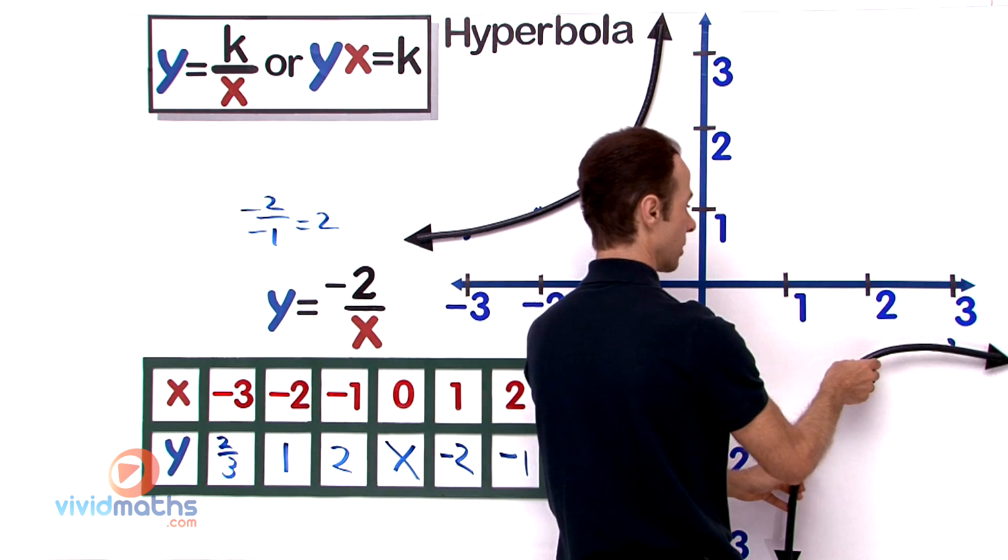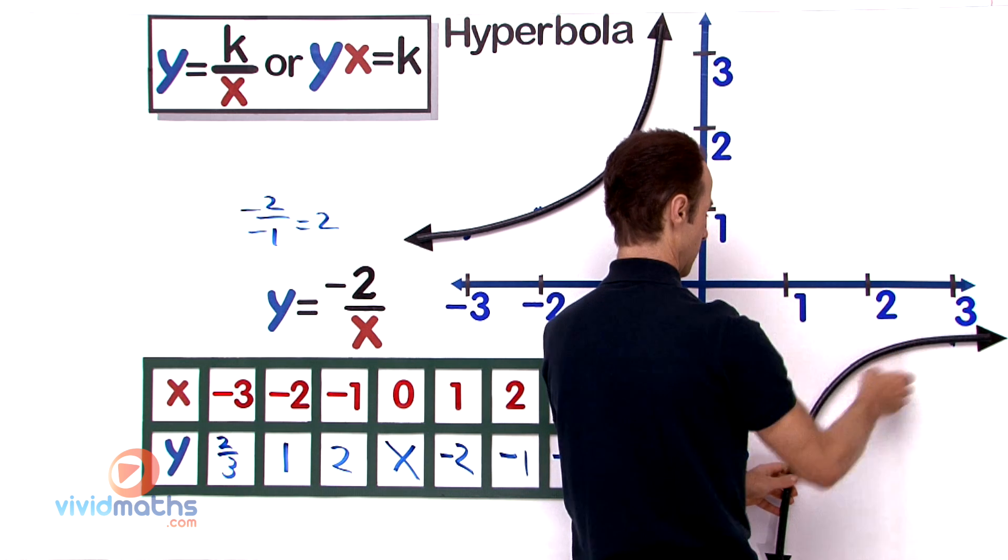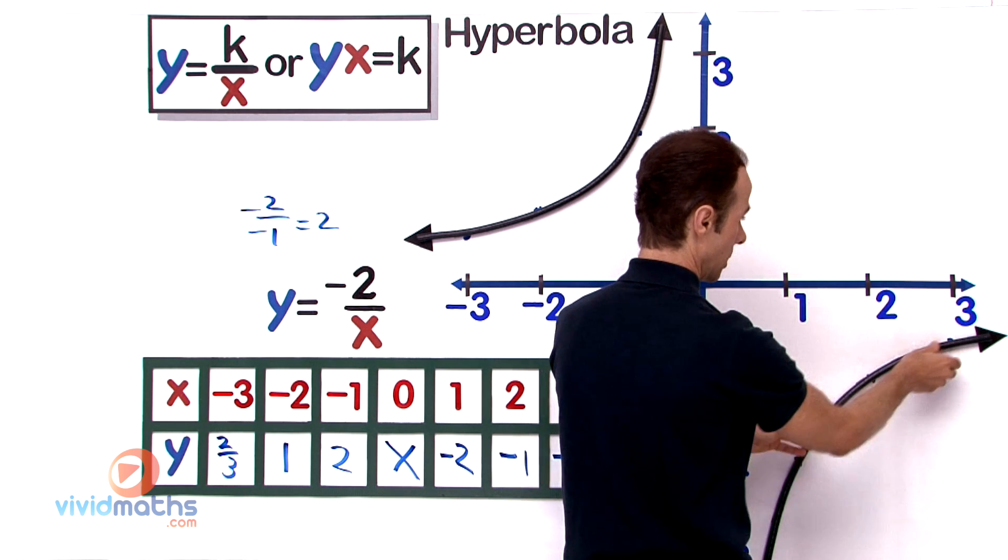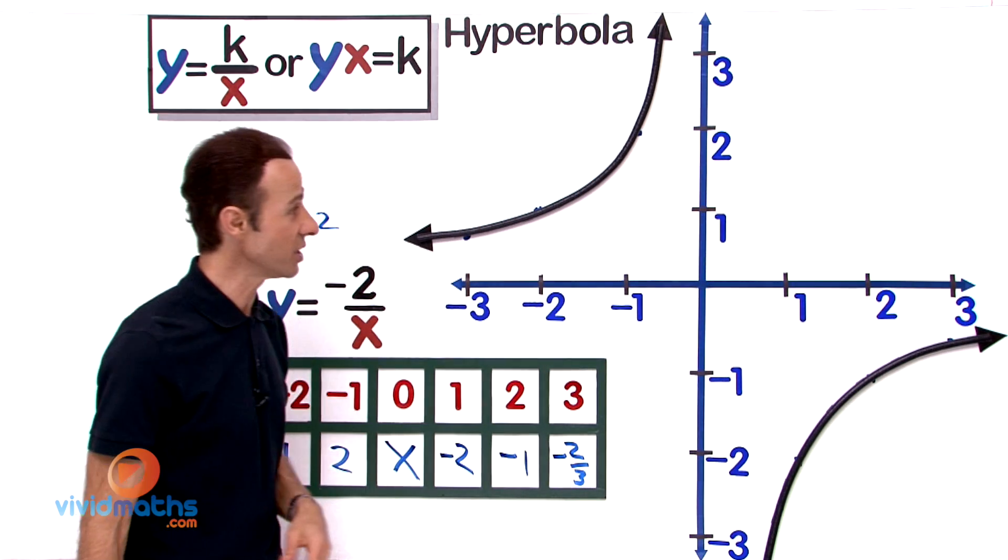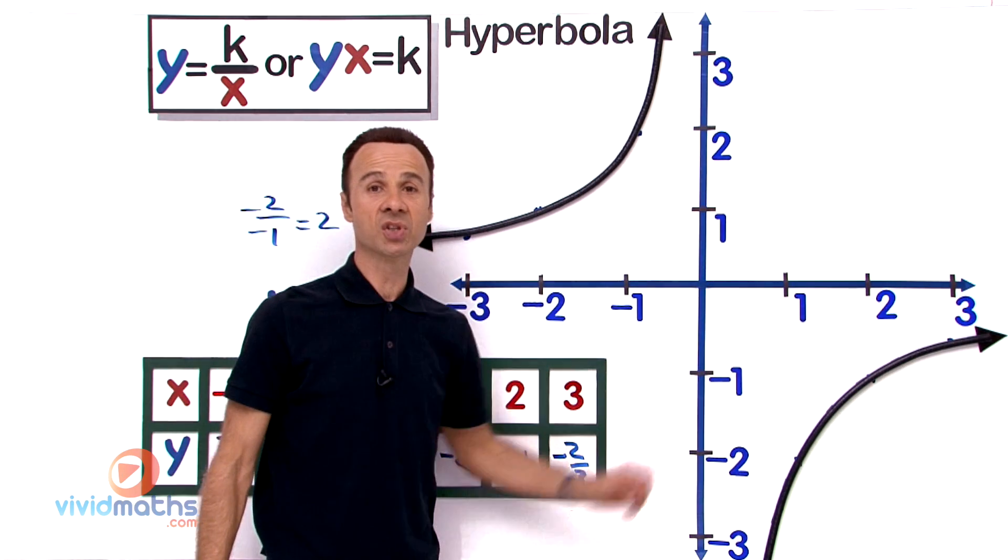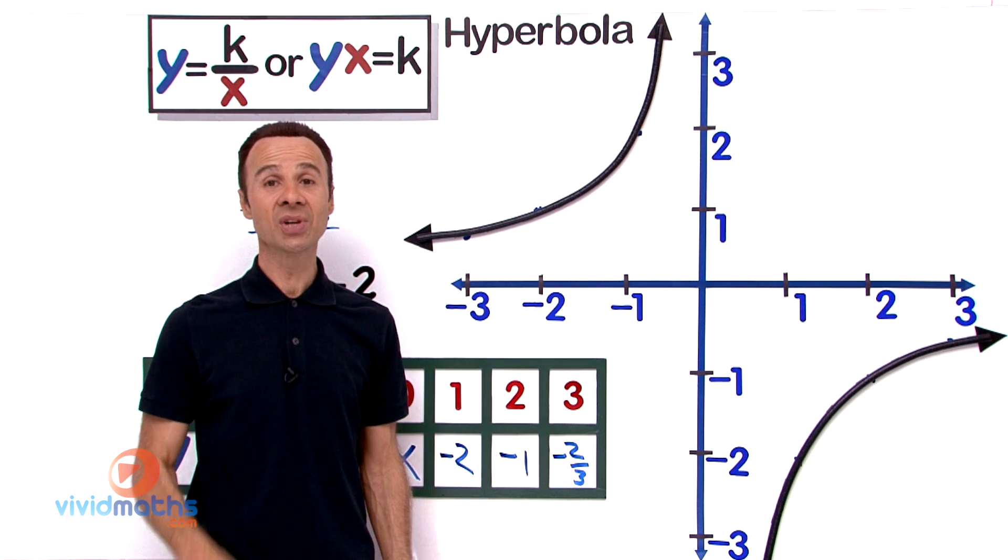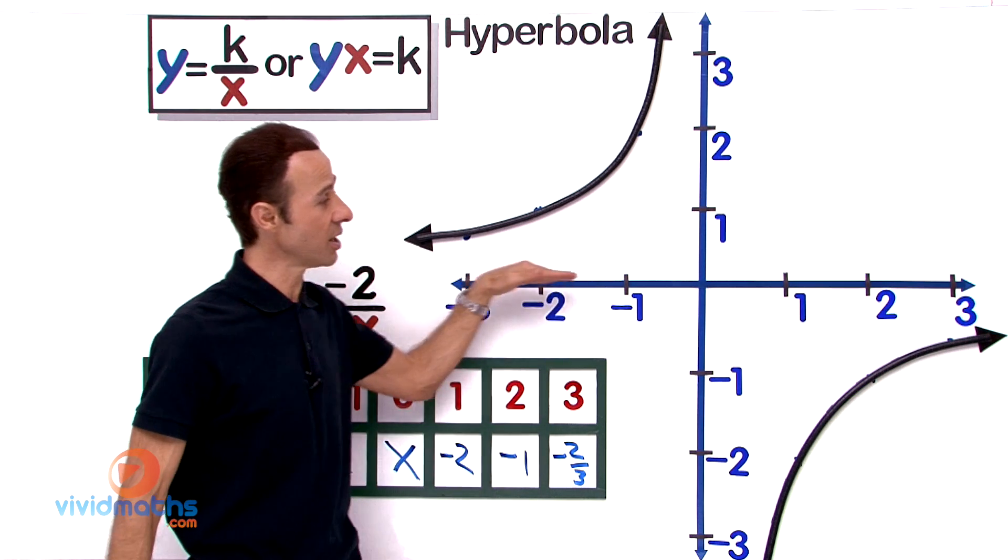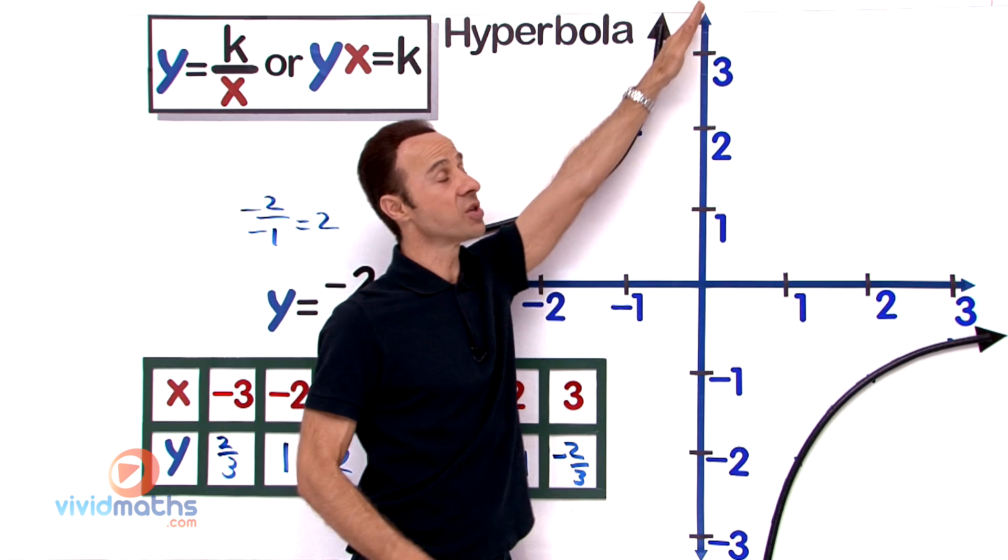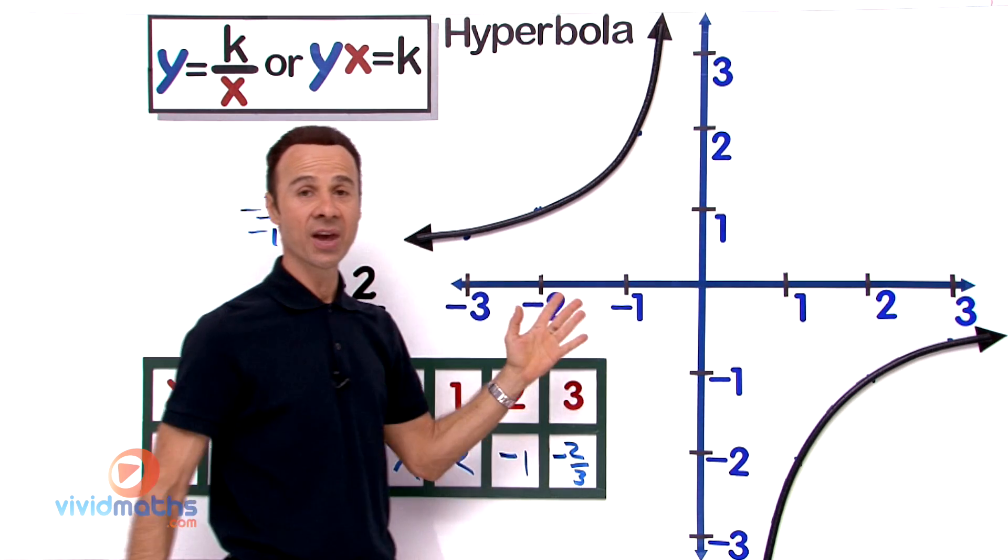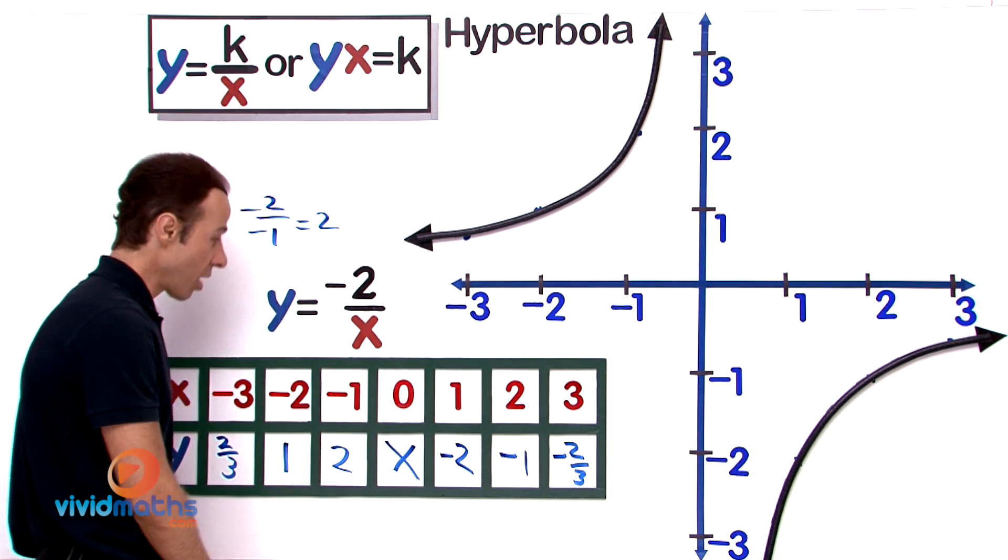Now the second curve is going to go through there. There is our second curve right over there. As you can see, they are the same shape and size. They're discontinuous at the axis—discontinuous here at the x-axis and the y-axis, meaning the curve will approach the axis but never actually touch.